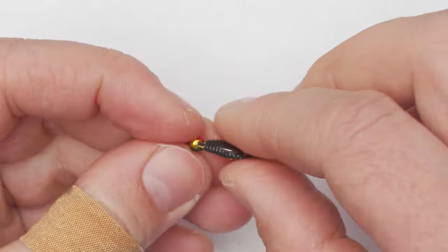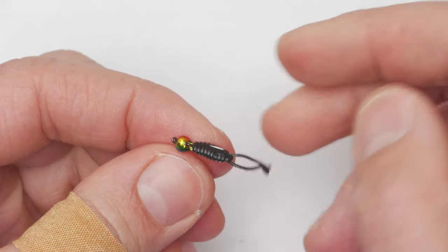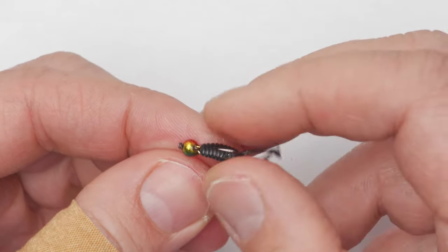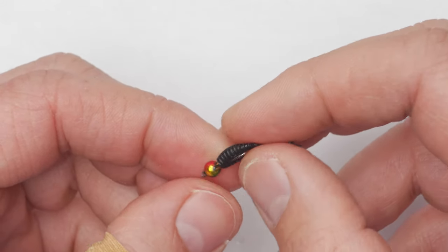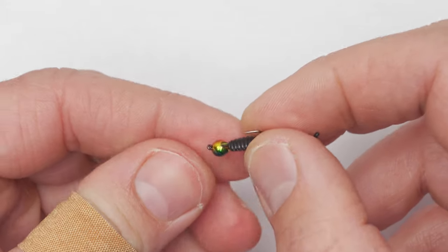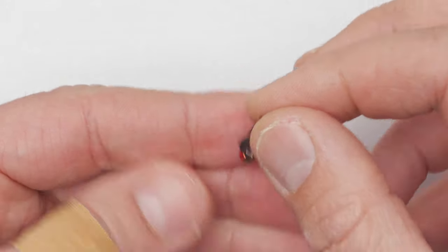So this thing now will catch everything: big fish, small fish, predatory fish, prey fish, anything really. Crayfish probably as well.